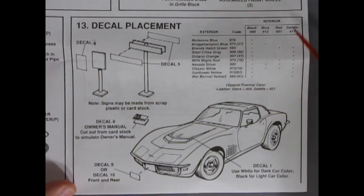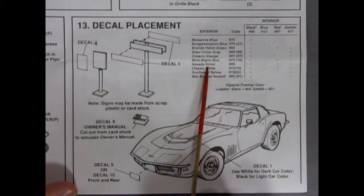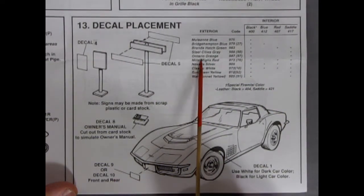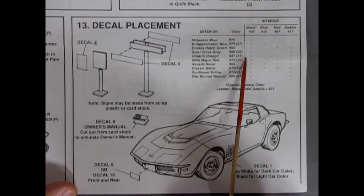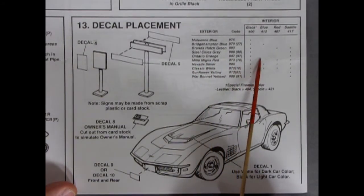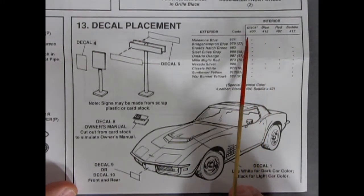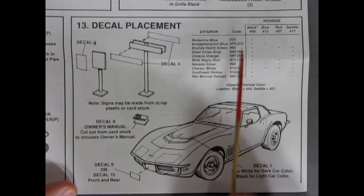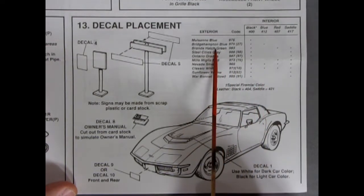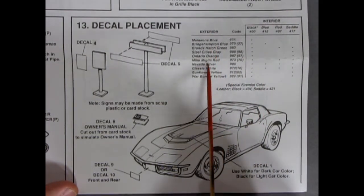And here's where we see our exterior and interior match-up color paint charts. So it does say some cool things. There's Ontario orange, for example, and it would have a black interior or a saddle interior. So you had black, blue, red, and saddle as your interiors. And your exteriors, you have all these different ones here.